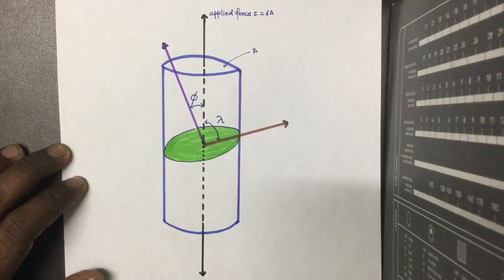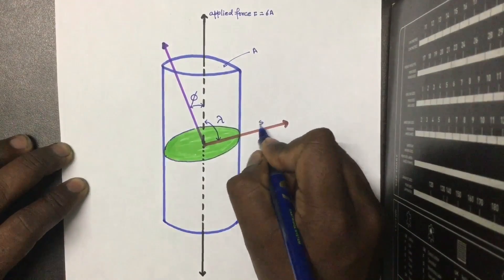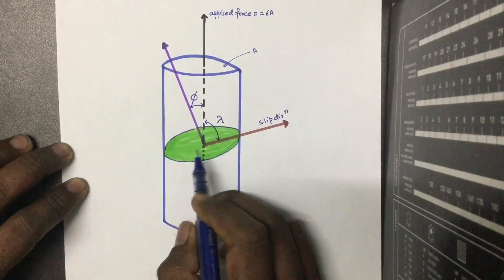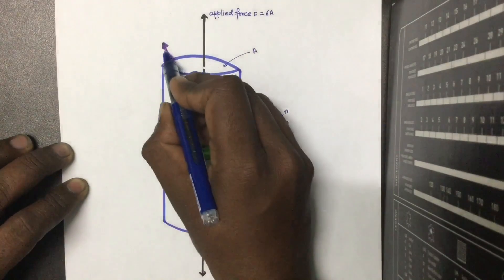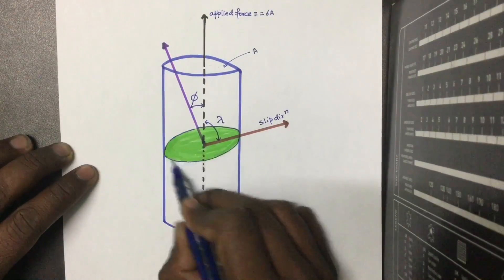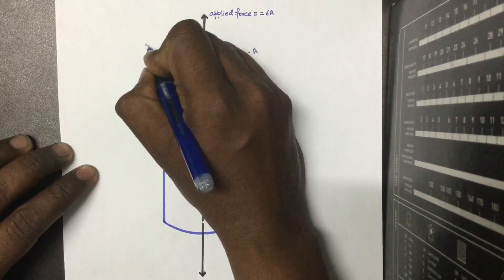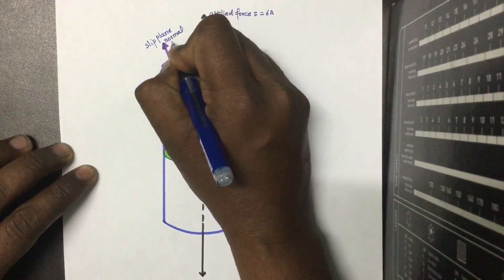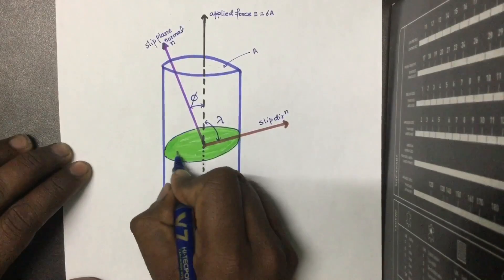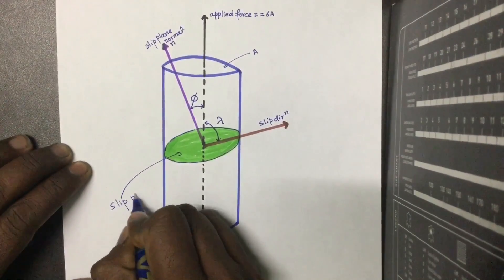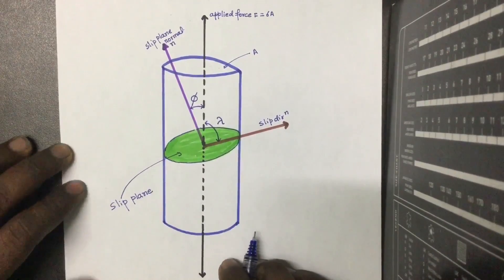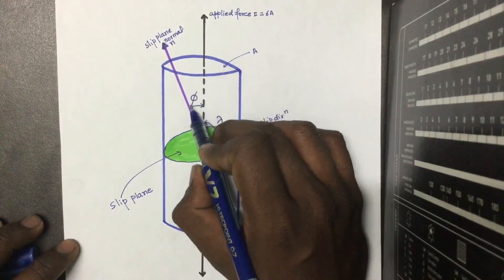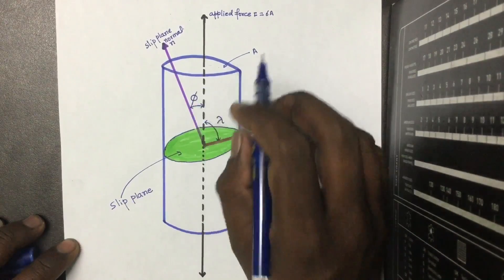This direction here is our slip direction, and this is our slip plane. The normal to the slip plane is denoted by n. The slip plane normal is n, and this is our slip plane.